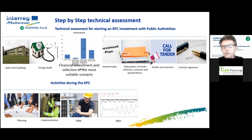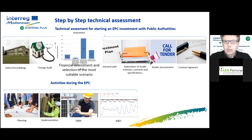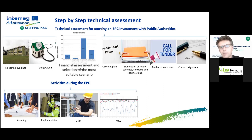In the first phase, it's necessary to select the buildings that are most interesting for an energy performance contract, then carry out the energy audit in order to understand what is possible to do in these buildings. After that, it is necessary to realize a financial assessment, and then select the most suitable scenario about the contract definition that we have to report in our tender. Then it's possible to realize the investment plan.